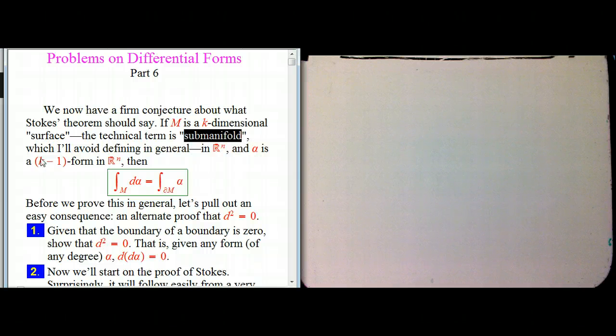Alpha is going to be a k-minus-1 form in R^n, and that doesn't quite match the dimension of the surface. The reason for that is we're going to take d alpha, which is a k form, and integrate it on M. And our conjecture is that's the same thing as if we took the original form and integrated over the boundary of M.